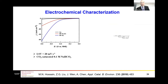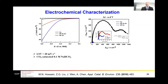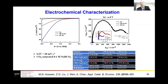Looking at the electrochemical reduction of carbon dioxide activity, the smooth gold surface shows low activity. With nanoporous gold-zinc, the current is much higher. Using electrochemical impedance spectroscopy, the charge transfer resistance of the nanoporous gold is much lower, confirming the enhanced activity.